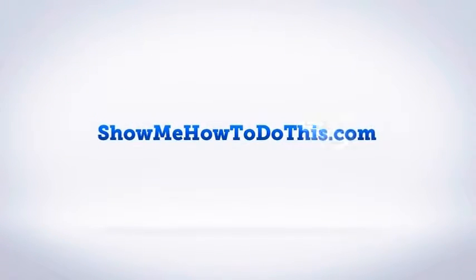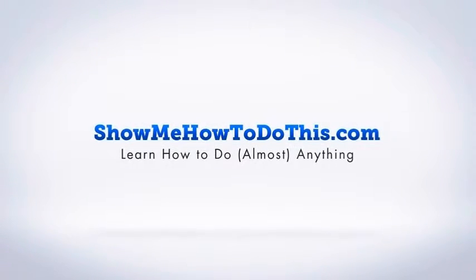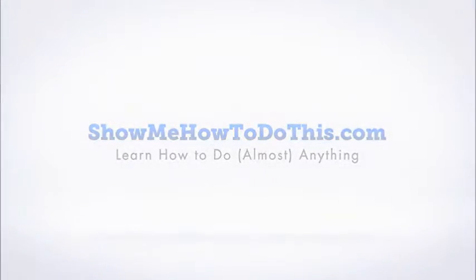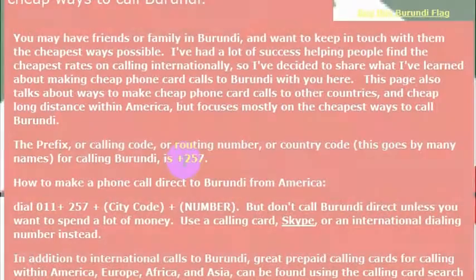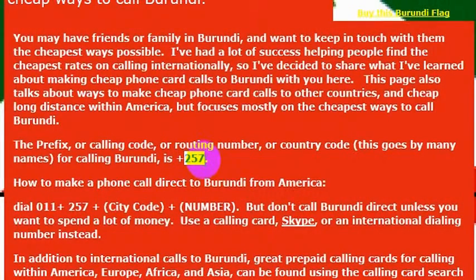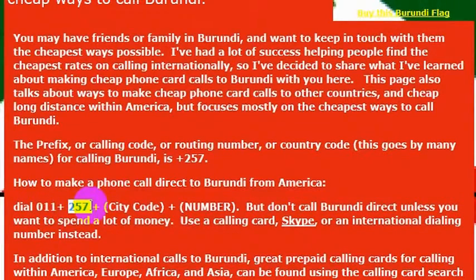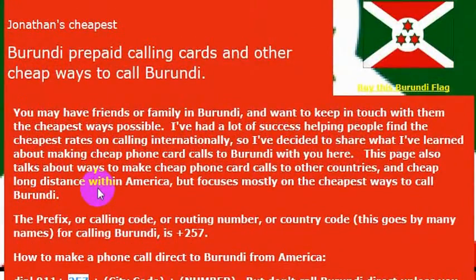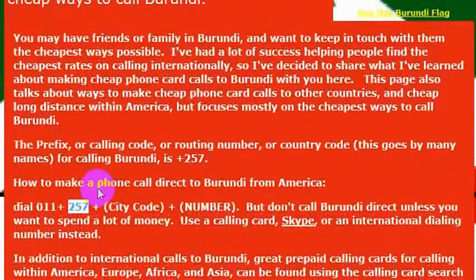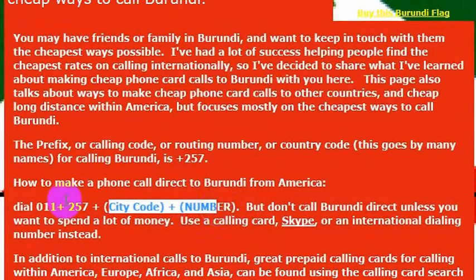Calling Burundi from the United States is quite simple. All I need to know is the country code for Burundi, which is 257. So what I would do is dial 011, the international dialing code, and then dial 257, which is the country code for Burundi. So 011, 257, then the city code and the number.